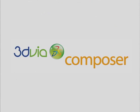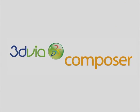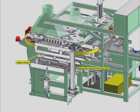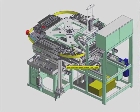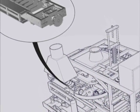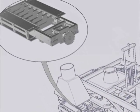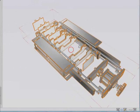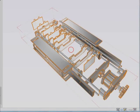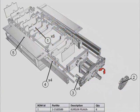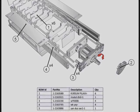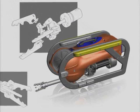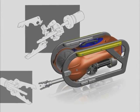The answer is 3D via Composer. 3D via Composer is a 3D software product that lets you create high-quality product graphics and interactive animations directly from the 3D data that product designers and engineers create in their CAD systems. This is much more efficient than creating documentation from scratch after the product is manufactured.